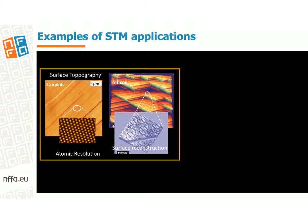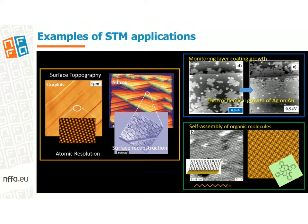The slide shows terraces and steps of silicon and graphite. By zooming onto a terrace, the atomic organization of the materials can be readily achieved. The slide also shows the in-situ monitoring of an electro-deposited silver layer on gold, as the potential is negatively scanned. The self-assembly process of alcanethiols and aromatic compounds on gold are also illustrated in the slide.